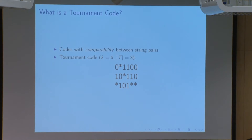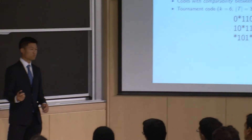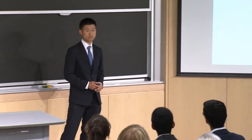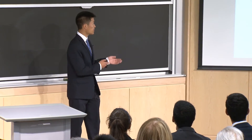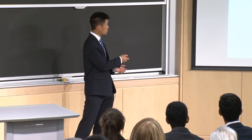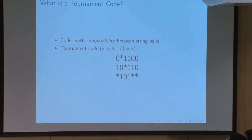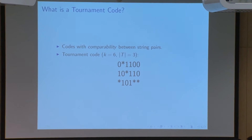A tournament code is a code with the property of comparability between every pair of strings. What this means is that I can take any pair of strings in a tournament code and determine which of them is greater and which of them is strictly lesser than the other. Over here, we have an example of a tournament code of length six and size three, so there are three strings in the tournament code, and each has six characters in it.